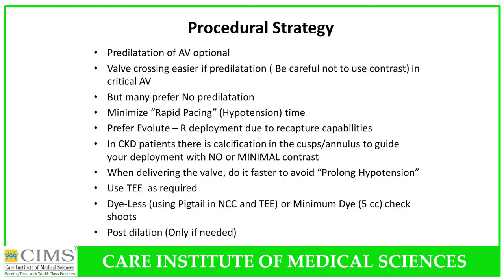The procedural strategy included pre-dilation of the aortic valve to facilitate crossing, while carefully avoiding contrast use. Many cardiologists do not prefer pre-dilation, which is also acceptable. If pre-dilation is performed, rapid pacing time should be minimized to avoid prolonged hypotension. The Evolute R valve was preferred due to its recapture capabilities, though the Sapien valve is also acceptable if the operator is expert with it. In CKD patients, calcification in the cusps and annulus serves as a natural landmark to guide deployment — so contrast is not actually required.